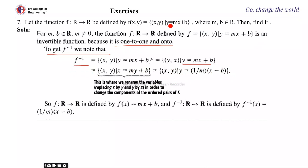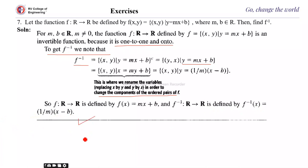For finding the ordered pair for the inverse, it is obtained by interchanging and transferring b to the left, giving y = (y − b) / m. That is why, because we are interchanging the variables, y = (1/m)(x − b). So x is the input and y is the output in the inverse. We rename the variables by replacing x by y and y by x in order to change the components of the ordered pairs of f(x). So f: R→R is defined by f(x) = mx + b, and f⁻¹: R→R is defined by f⁻¹(x) = (1/m)(x − b). This is how you find the inverse of the function given the equation.